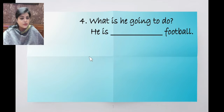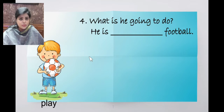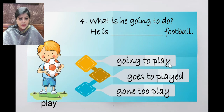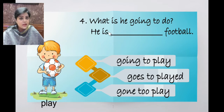What is he going to do? See the picture here — play. He is dash football. Options: going to play, goes to played, gone to play. When talking about future tense, we use going to play. He is going to play football. The correct answer is the first option: going to play.